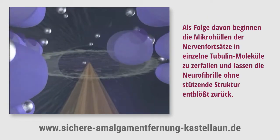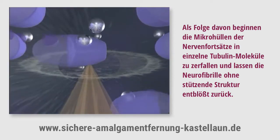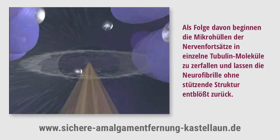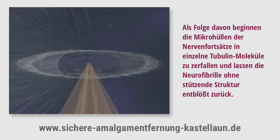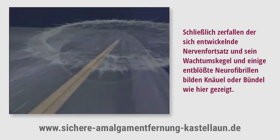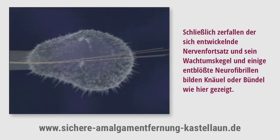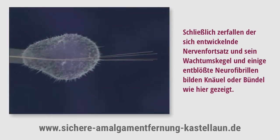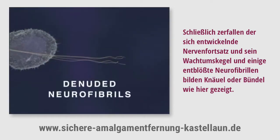Consequently, the neurite's microtubules begin to disassemble into free tubulin molecules, leaving the neurite stripped of its supporting structure. Ultimately, both the developing neurite and its growth cone collapse, and some denuded neurofibrils form aggregates, or tangles, as depicted here.